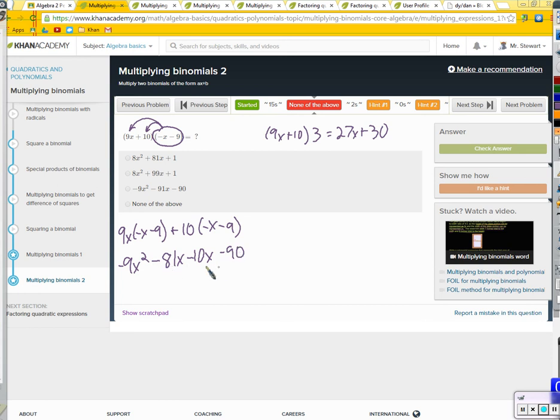We've got some like terms here that we can combine. So we've got negative 9x squared minus 91x minus 90. There it is right there. So that's what I'm going to answer.